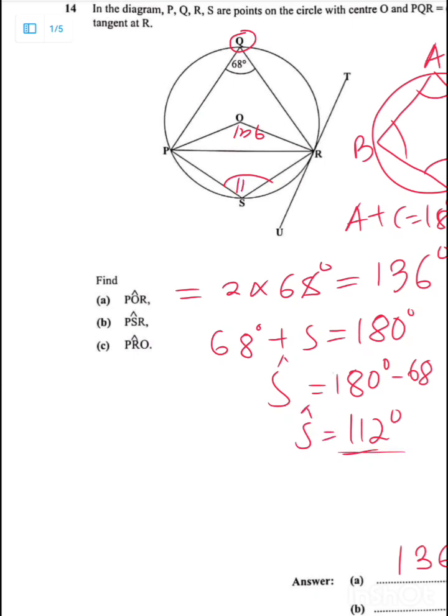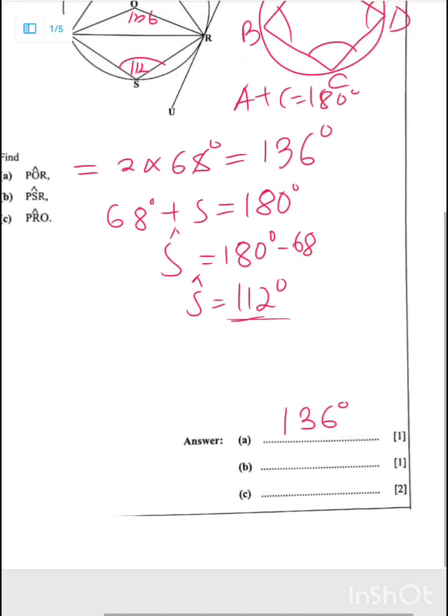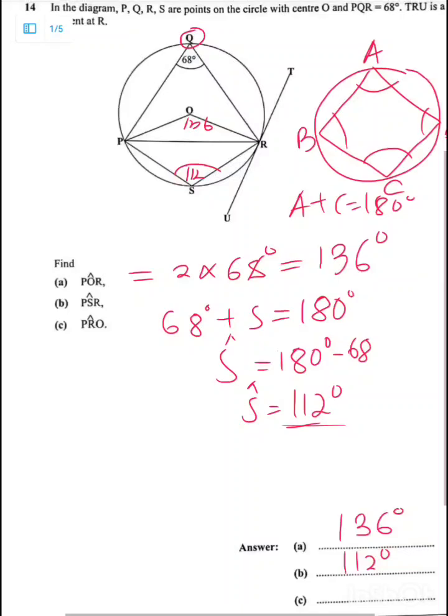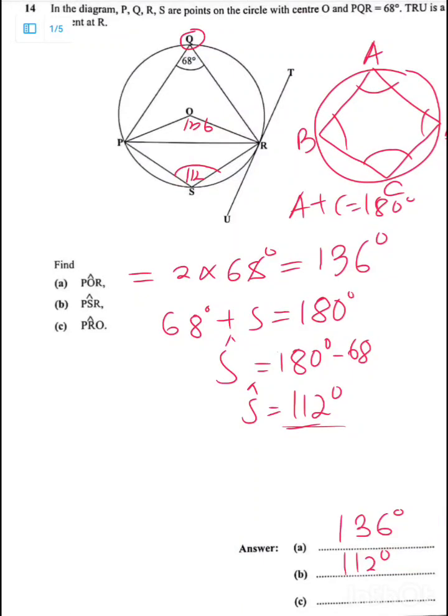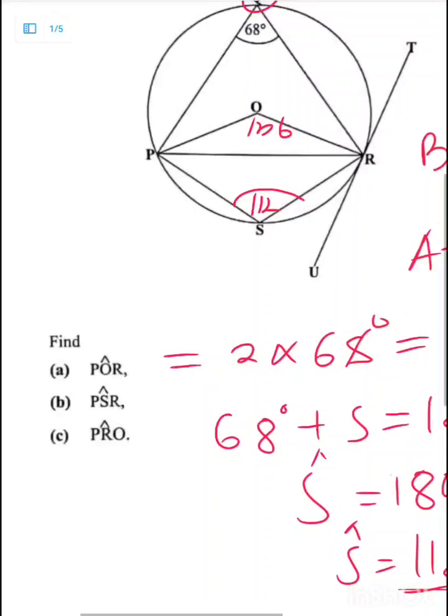So this angle here is 112 degrees. So we come here and record it nicely. 112 degrees. Don't forget to record whatever that you are finding. Then we go to C. C says P, R, O. P, R, O is this angle here.